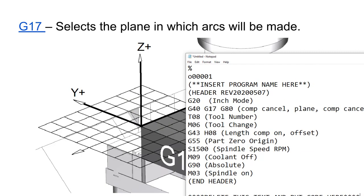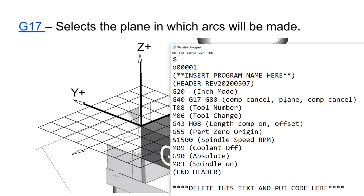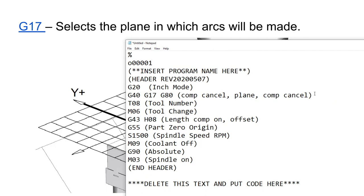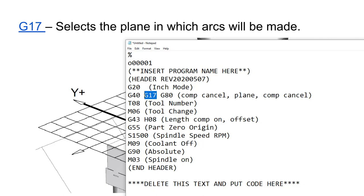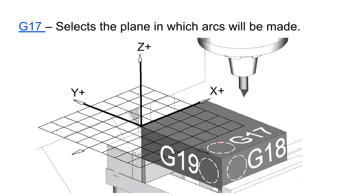In this header we've got G17. The explanation is plain but cryptic — one reason is you can only have so many characters in a comment; if comments get too long the controller can't handle it. G17 is selecting the plane. When we start programming arcs and circles, they can exist in one of three planes. All the arcs we'll program in this class will be on the XY plane, so they'll all be G17 arcs.